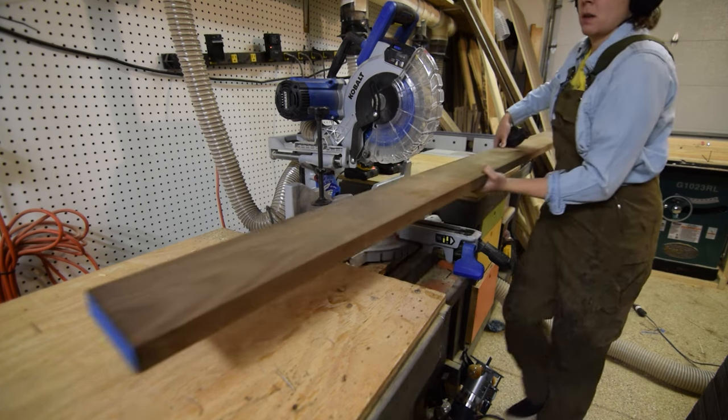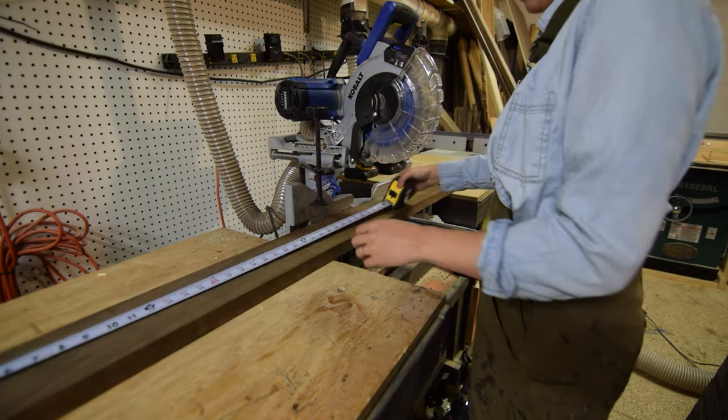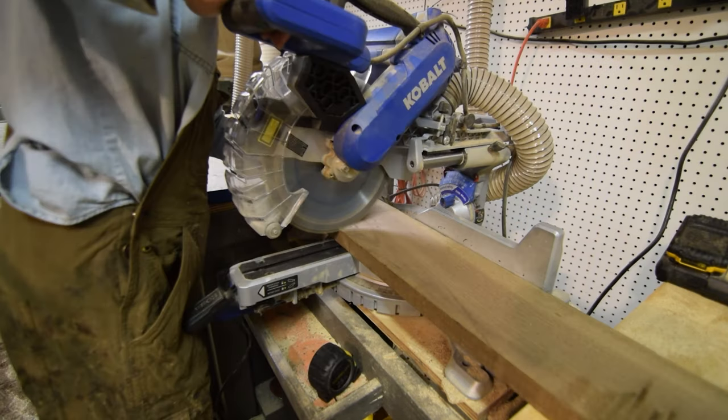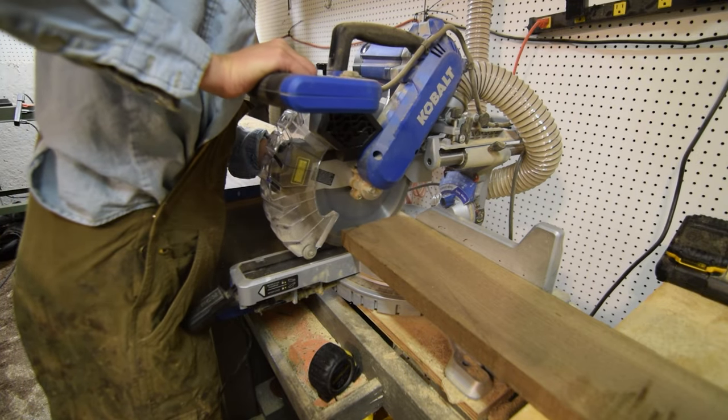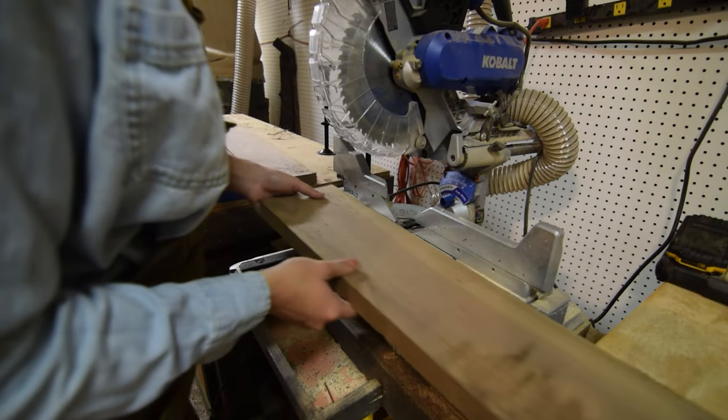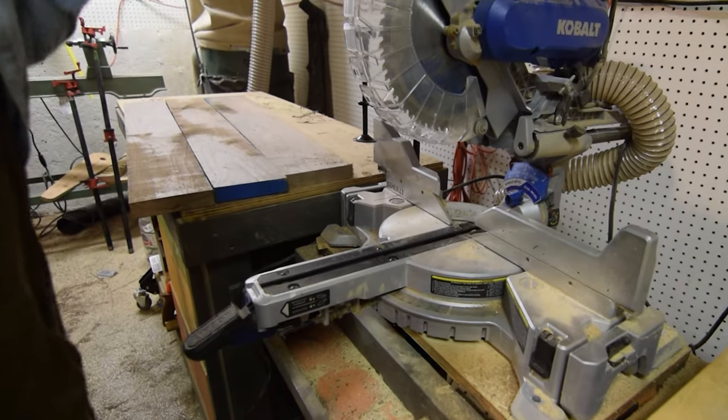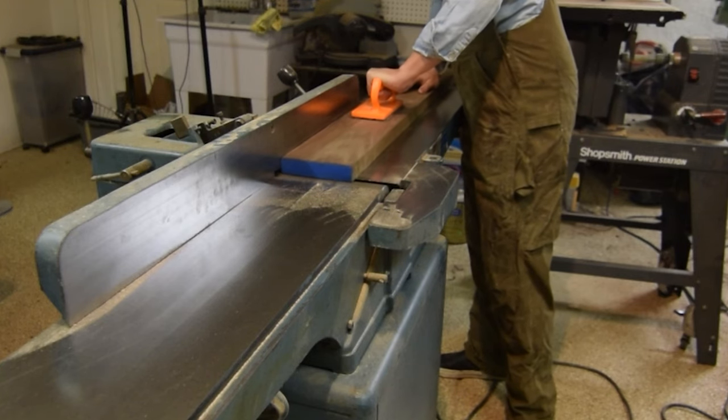We'll kick off part 2 with the bench portion of the built-in, starting with the bench top. I rough cut 3 planks of 5 quarter walnut down to just longer than the final bench dimensions, then got to squaring them.